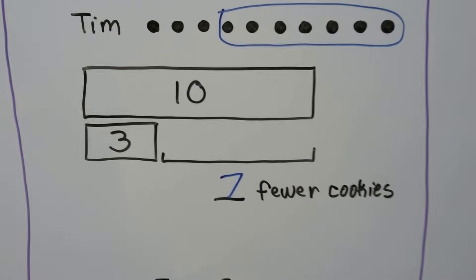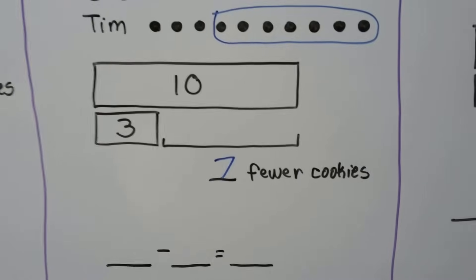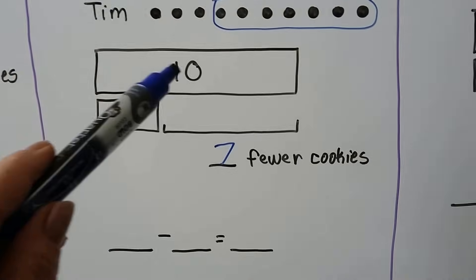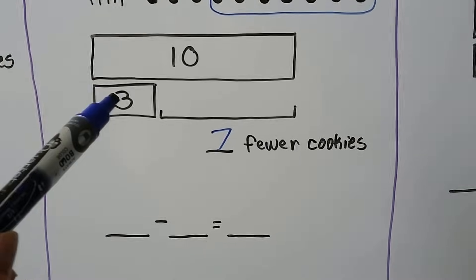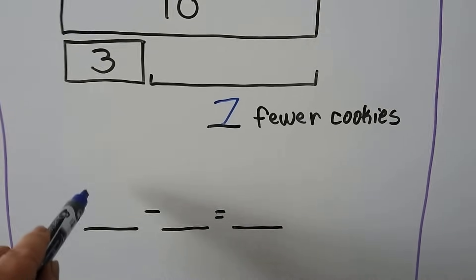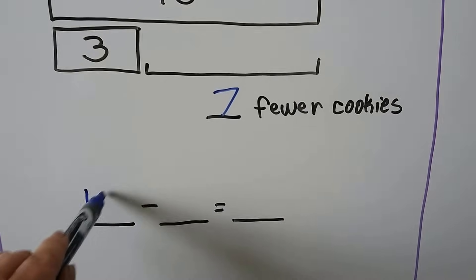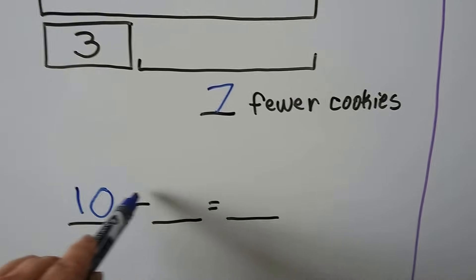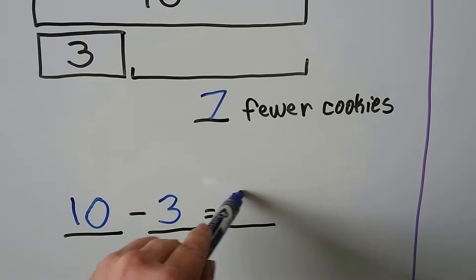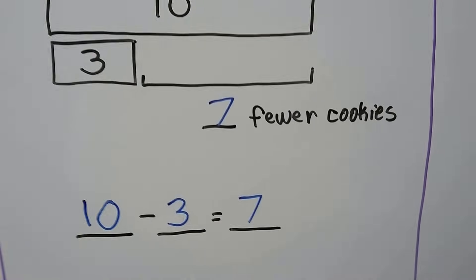We can use the bar model to write a number sentence: ten minus three is equal to seven.